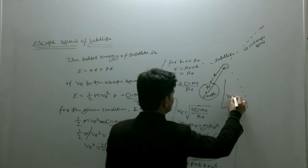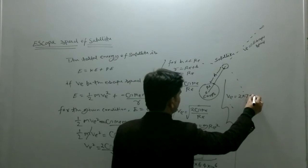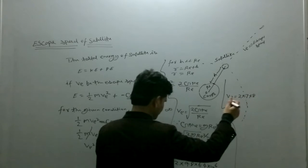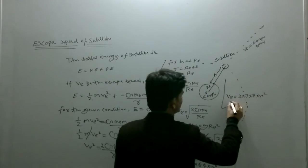In the calculation, v_e equals 2 into 7 into 8 into 10^2.